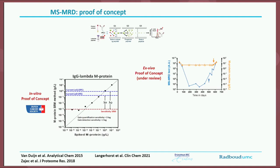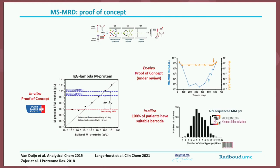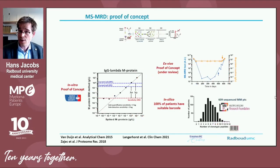For this method to be successful, we need to apply it to every patient with multiple myeloma. To investigate this, we collaborated with the Multiple Myeloma Research Foundation and were allowed to examine the genetic information of the M protein of 609 myeloma patients. We demonstrated that all 609 patients had a unique barcode, and on average four to six unique fragments per patient could be used for mass spec analysis. This means we can select two barcode fragments per patient, leaving an internal control in each measurement — so if a patient responds to therapy, both signals go down, and if a patient relapses, both signals go up.